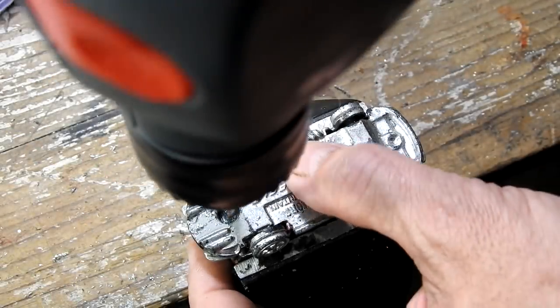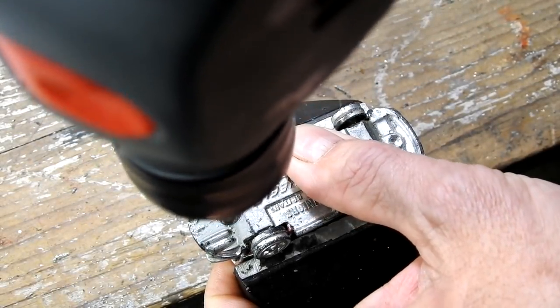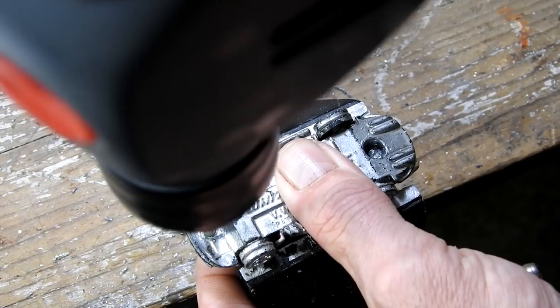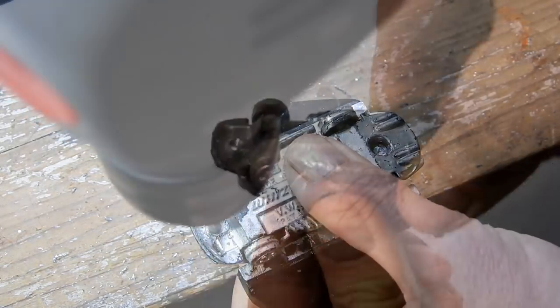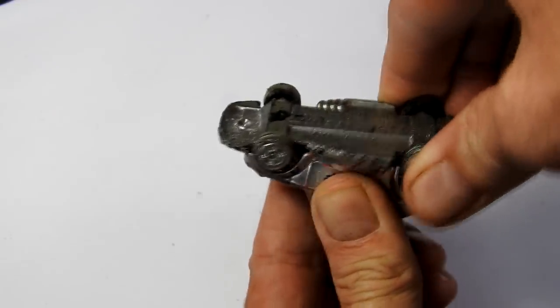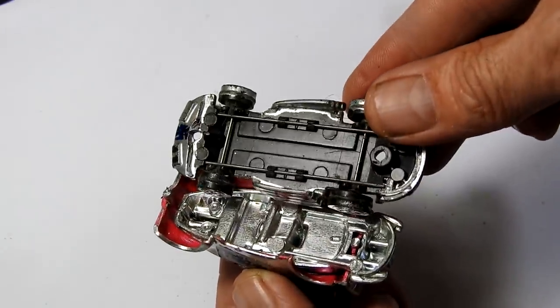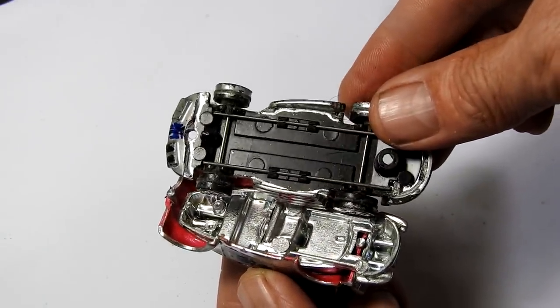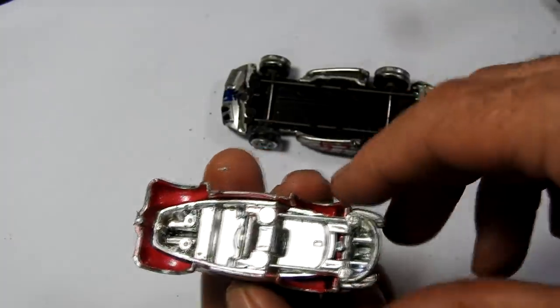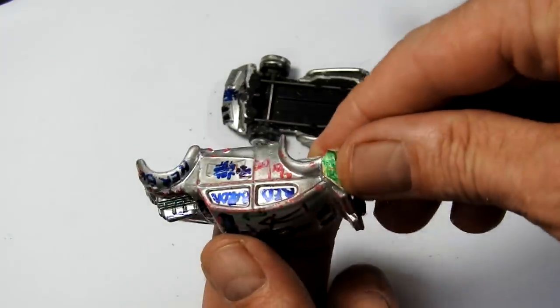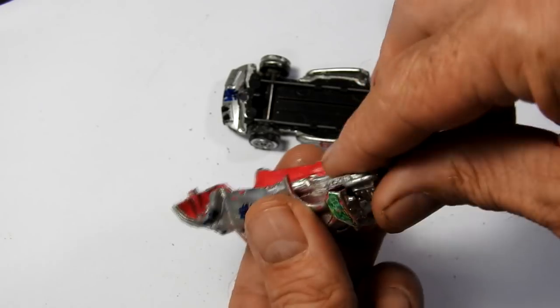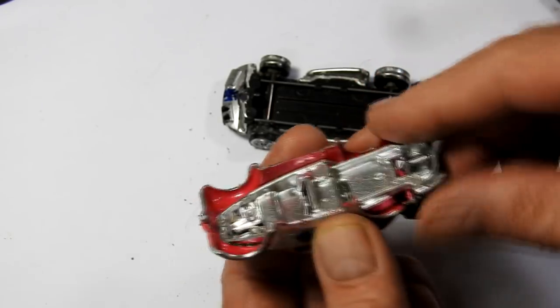Right, so I'll crack on and take it apart. There's two posts to drill out. And then I can pop the base off and take it all apart. It's got the wire suspension there. Here's the interior. It's a little bit stuck with the silver paint, so I'll be careful taking it out.